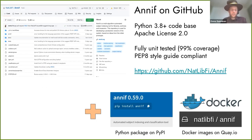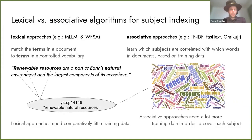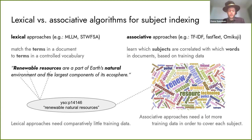All ANIF development happens on GitHub and it's available as a Python package on PyPI and as Docker images. The algorithms in ANIF fall into two broad categories. Lexical approaches such as MLM and SDWFSA are mainly based on string matching between terms in documents and terms in the vocabulary, needing comparatively little training data. Associative approaches based on statistical and machine learning models learn which subjects are correlated with words in documents from large amounts of manually indexed training data. Both kinds have their strengths and weaknesses, and in ANIF they can be combined.